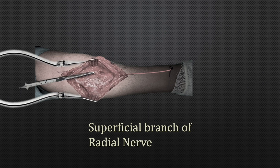Gently dissect this region. With gentle dissection you will be able to isolate the superficial branch of the radial nerve — this glistening white structure. Dissect it clear and protect it laterally. Be careful not to disturb the radial artery, which is more prominent now after clearing it from the superficial radial nerve.